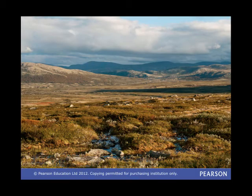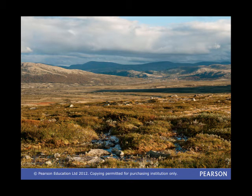Tundra environments, where at least one month of the year has an average temperature above freezing, do have some vegetation, but it is still too cold and dry for trees. The main things that do grow are moss and lichen. While there may be a thin layer of soil, under that the ground is frozen solid — called permafrost.